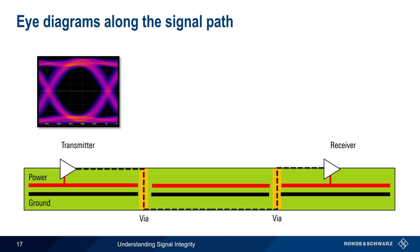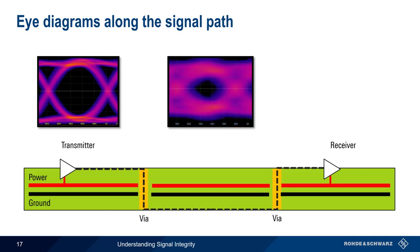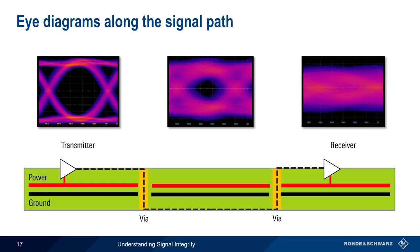As the signal moves through the channel, the eye will often narrow vertically and or horizontally. If the necessary steps are not taken to ensure adequate signal integrity, eye closure may prevent the receiver from being able to correctly recover the transmitted signal.